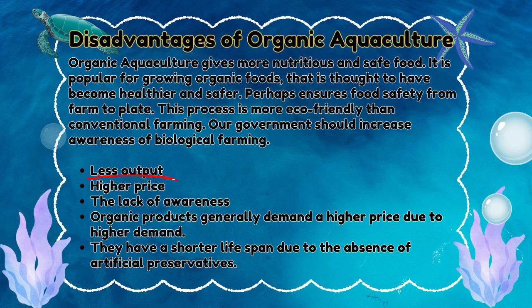The disadvantages of organic aquaculture include less output, higher price, and lack of awareness. Organic products generally demand a higher price due to higher demand. They also have a shorter lifespan due to the absence of artificial preservatives.